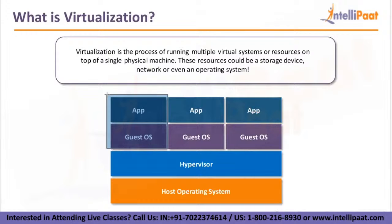But if we go with one application per OS, there is another issue: wastage of resources. Your virtual machine is not going to have only 1 GB of RAM or one CPU cycle. It will have two or three GB of RAM, two CPU cycles, at least 20 to 30 GB of hard disk. So if you run one application with that many resources, there is a wastage of resources — you are not able to utilize your resources efficiently. That is the problem statement.